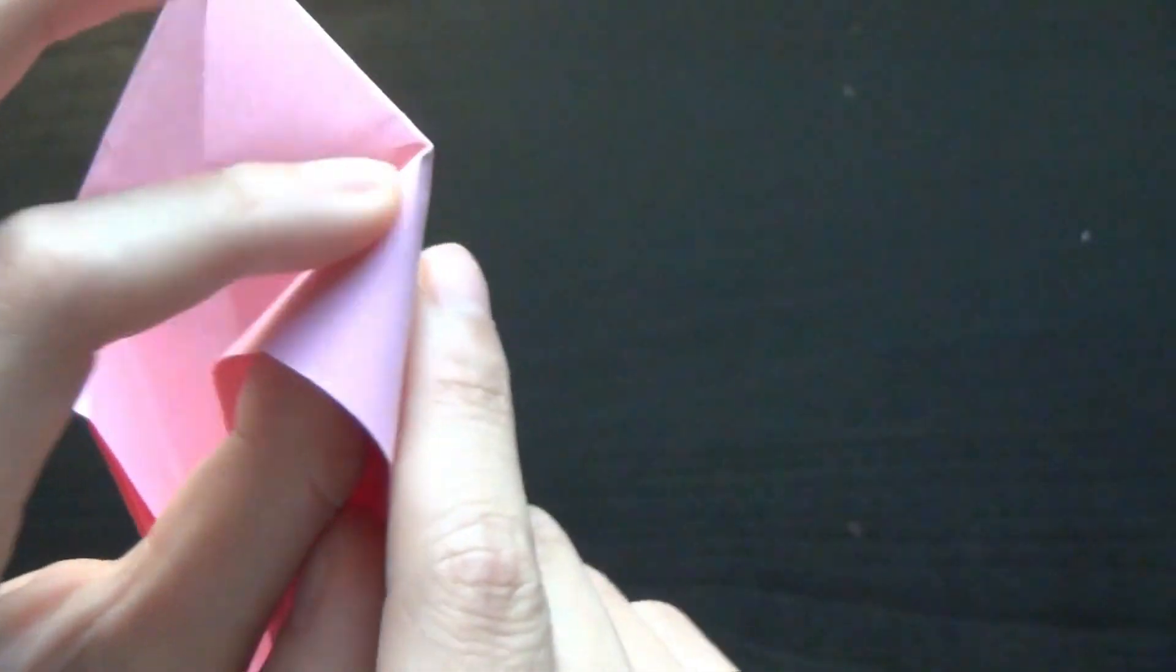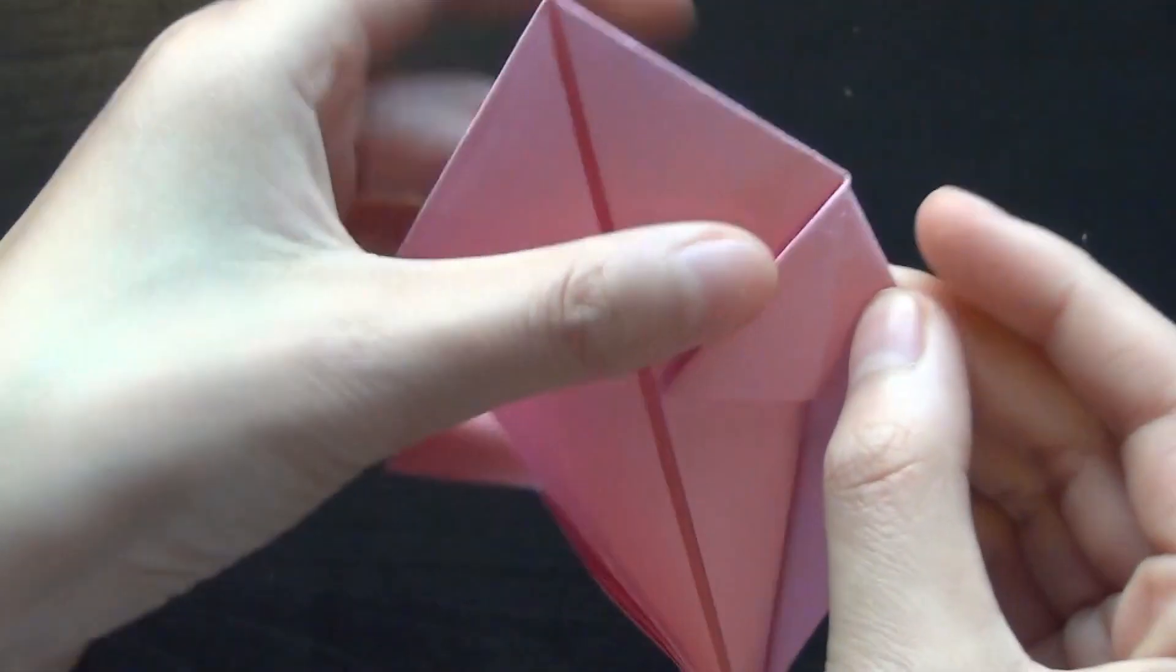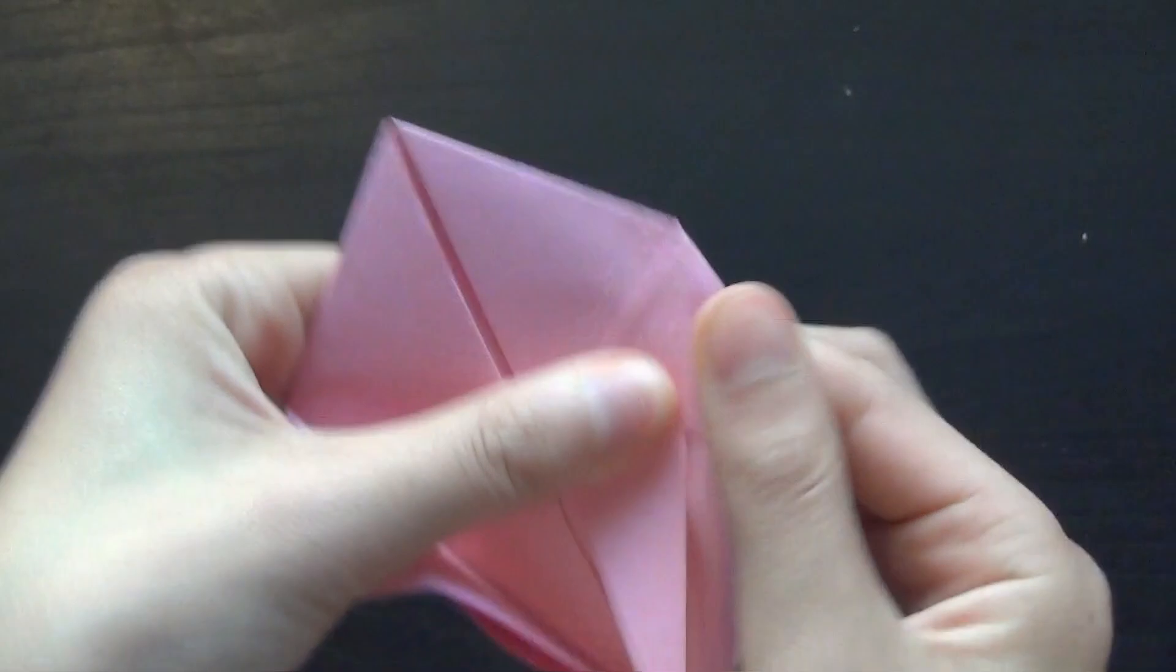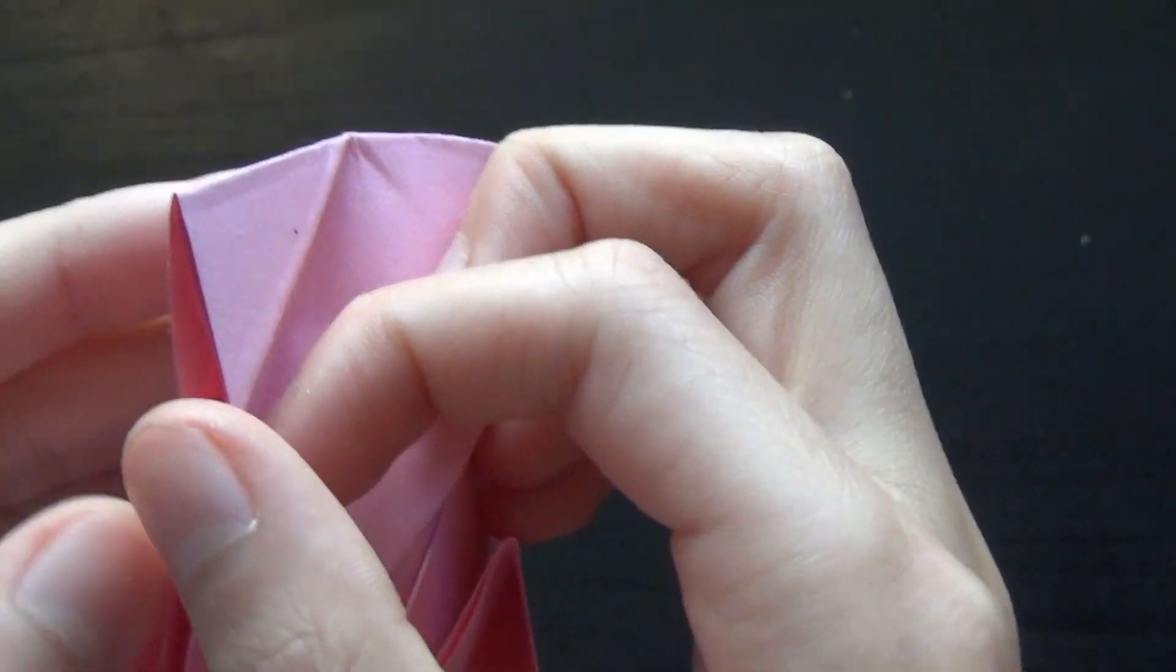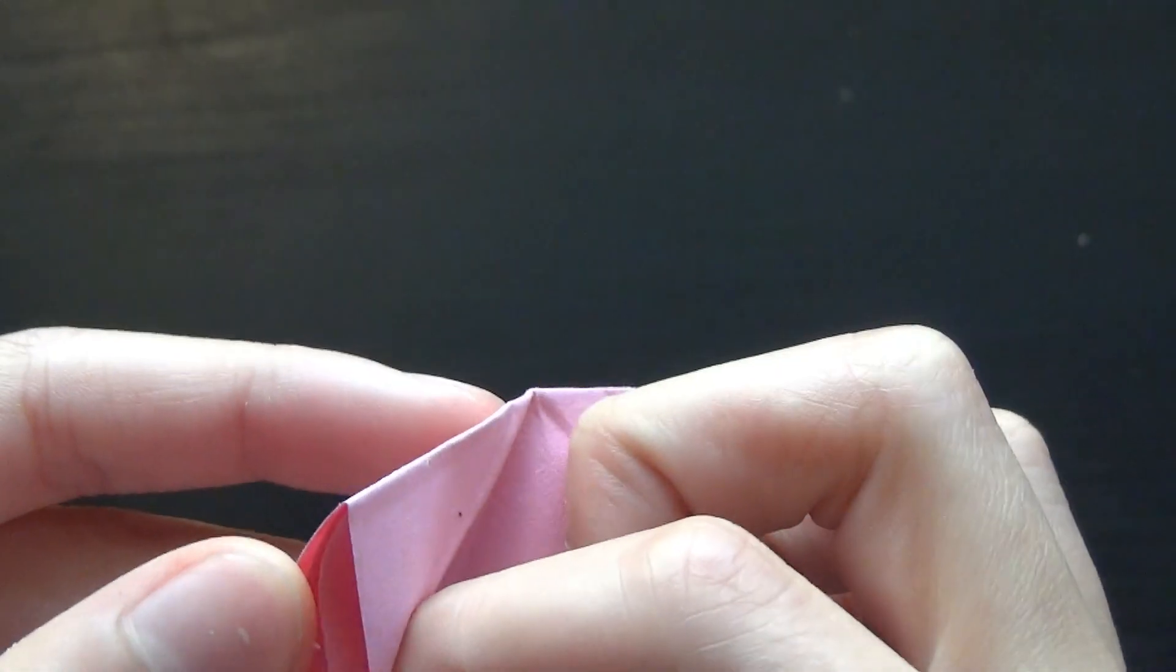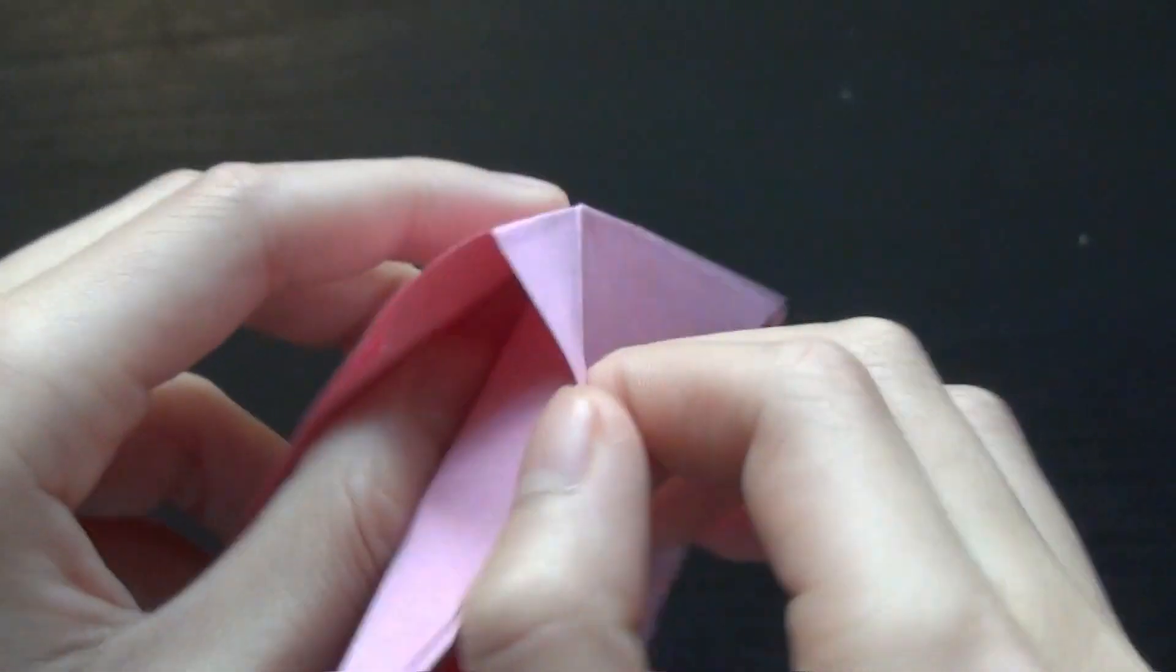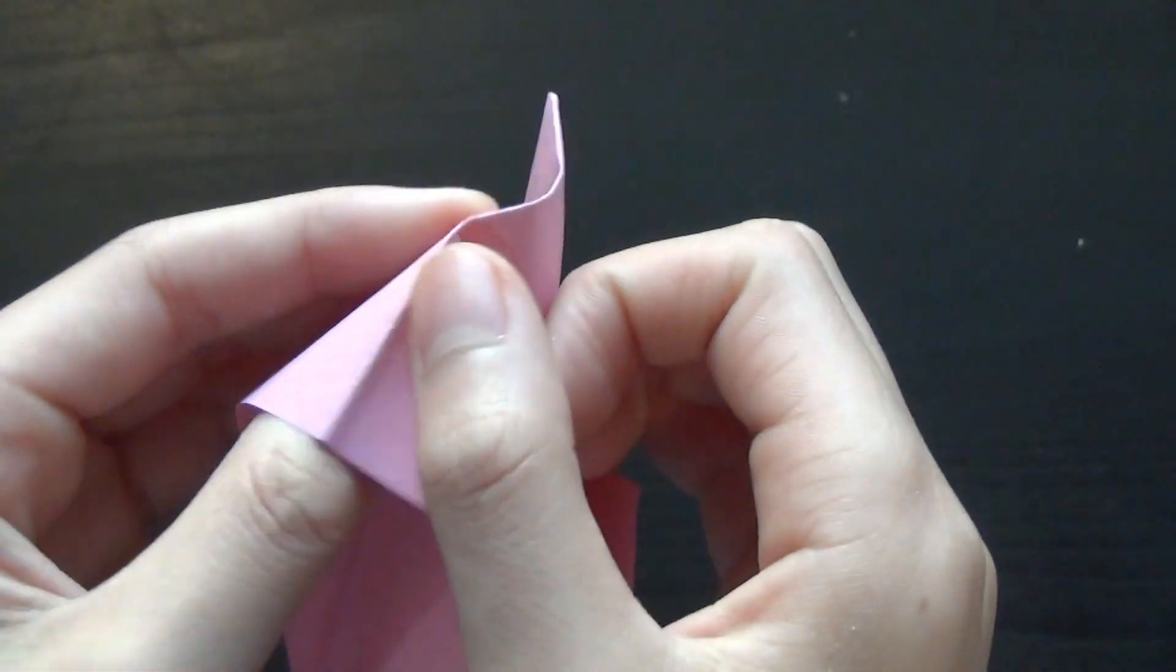Now what you want to do is put your finger in there and flatten it along the two creases you made. Do the same thing with this side. Just take two on each side and flatten it out.